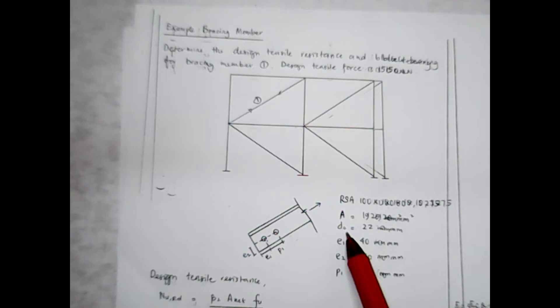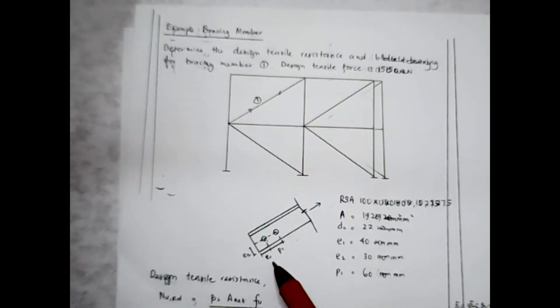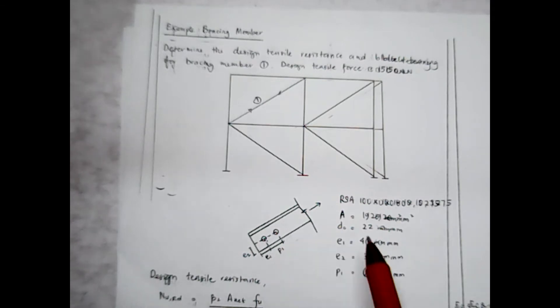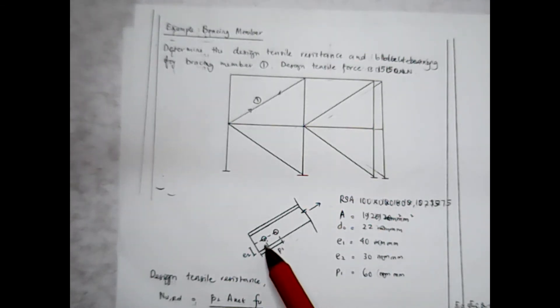D0 is the diameter of the bolt hole, which is the bolt diameter plus 2, giving 22 mm. E1 is the horizontal eccentricity from the end, which is 40 mm. E2 is the vertical eccentricity, which is 30 mm. And P1, which is the pitch distance between bolts, is 60 mm.